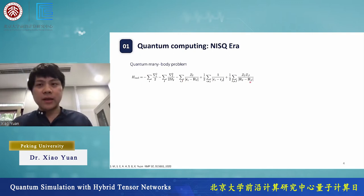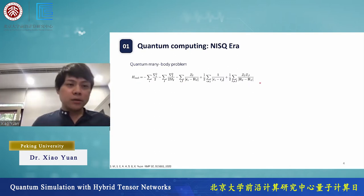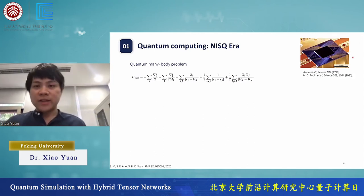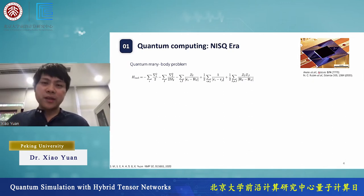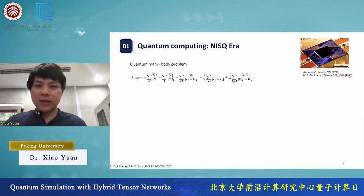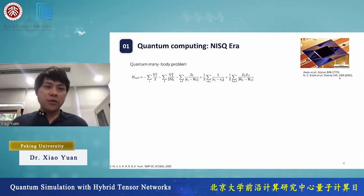The Hamiltonian is something like this, and we can do some encoding process to map this Hamiltonian to a qubit Hamiltonian. In experiments, for example, the Google team used their device to demonstrate supremacy, showing that they can also solve a toy model of this Hamiltonian. Basically, they showed in this paper that we can use a quantum computer to solve a 12-hydrogen chain.